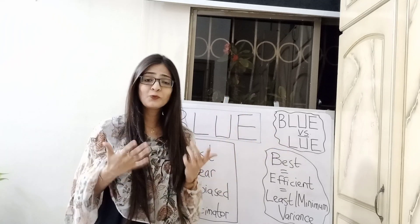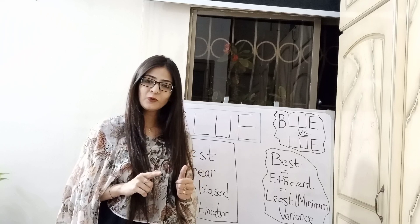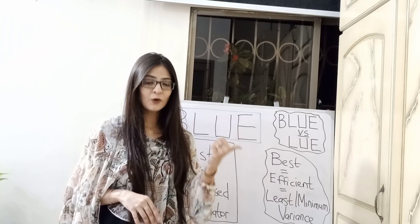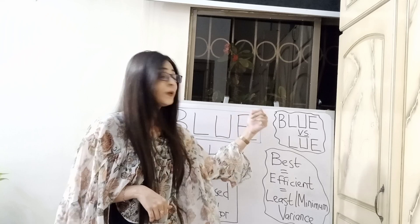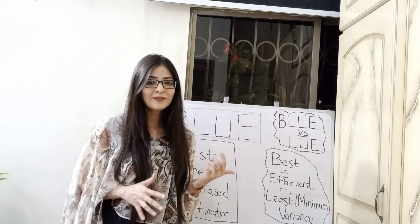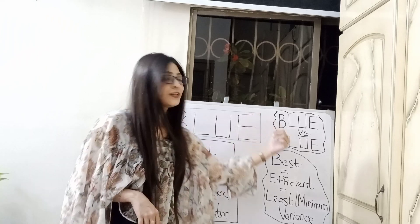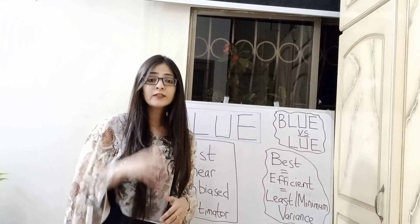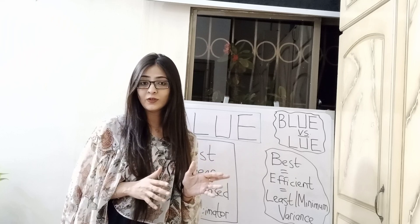Now the question arises: why do we drop the B? In the presence of multicollinearity, the T-tests are still valid because OLS is still BLUE. But in the presence of heteroscedasticity or autocorrelation, OLS is no longer BLUE — it's just LUE. This matters because the standard errors are no longer valid in the presence of heteroscedasticity or autocorrelation.